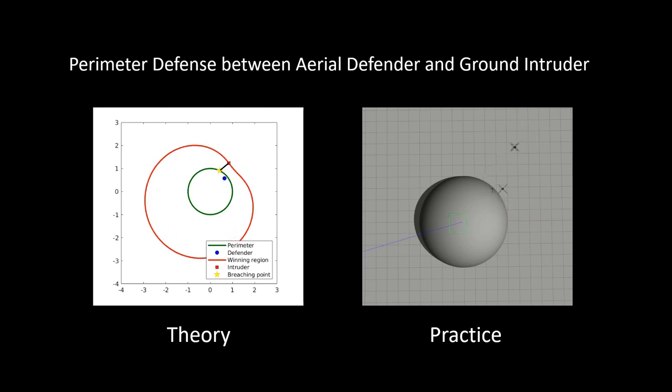This paper focuses on the hemisphere perimeter defense, and the optimal strategy for both defender and intruder are known for this special case, with proof detailed in the previous work as shown on the left. This work aims to simulate the robot using the optimal strategy derived from theory as shown on the right.